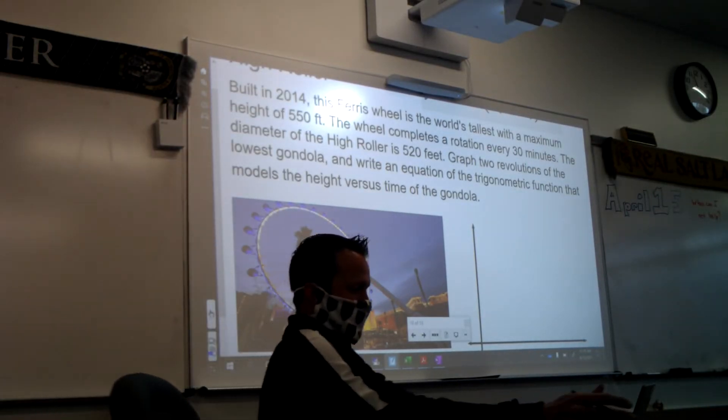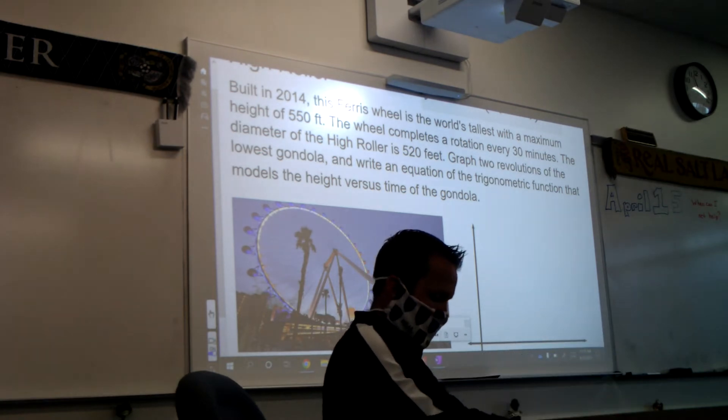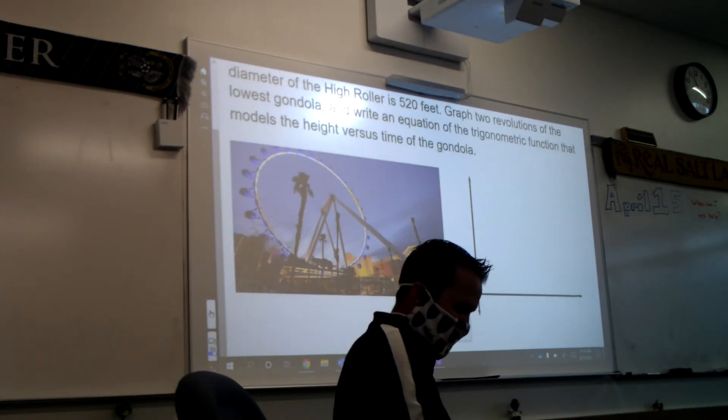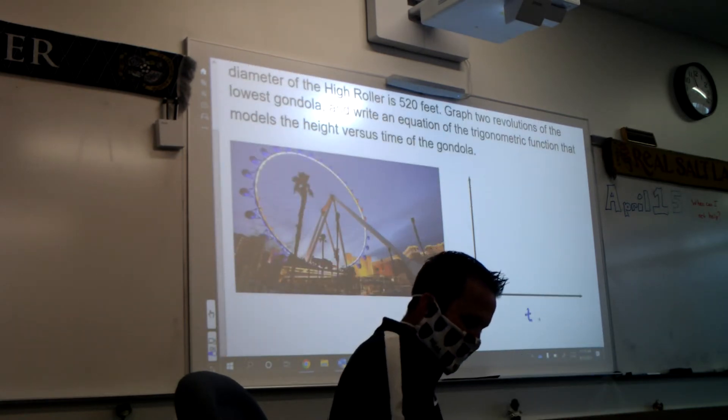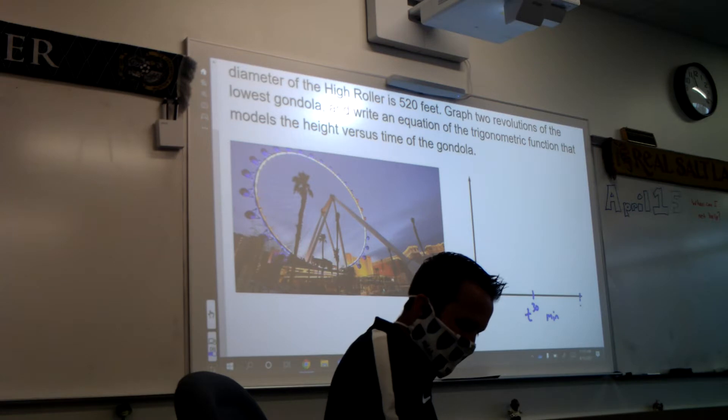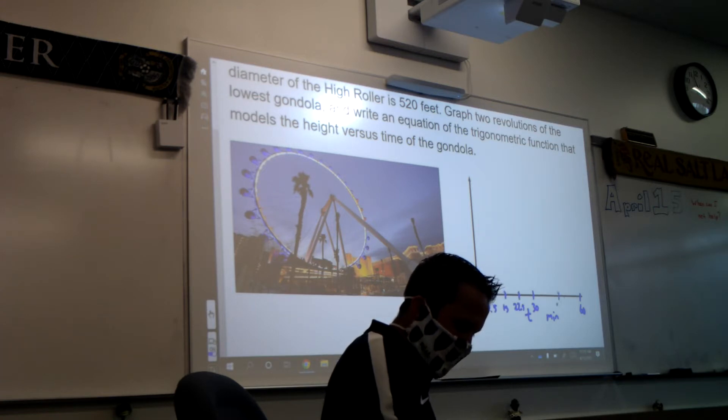Alright, so this should be very similar to the last one for the x-axis. This is again going to be time that we're measuring in minutes. So one revolution is done at 30, which means two is done at 60. So halfway is going to be 15, and then I get 7.5 there, and 22.5. Halfway is 45, which gives me 37.5, and then 52.5.